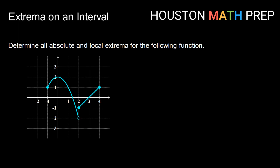Let's take a look at some functions and try to determine: do we have absolute extrema, do we have local extrema, and can we find them? For absolute extrema, can we find an absolute max and an absolute min if they occur? For the absolute max, I'm looking for the highest y value that the graph achieves. I can see that happening here — I have an absolute max at (0, 2). My maximum y value is 2, and it occurs when x equals 0.